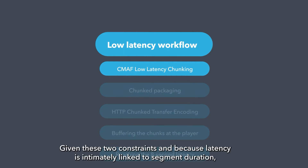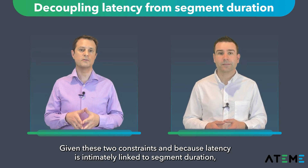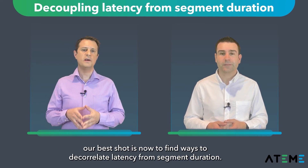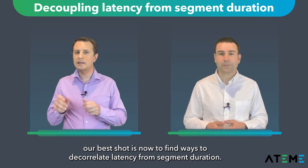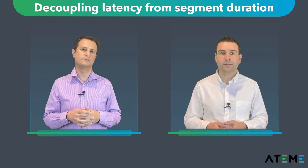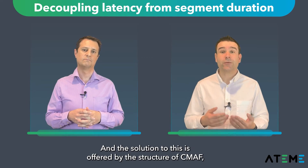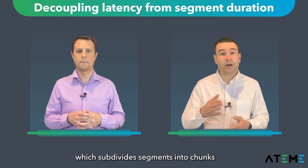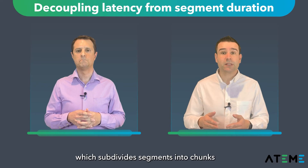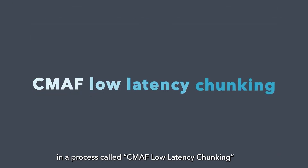Given these two constraints, and because latency is intimately linked to segment duration, our best shot is now to find ways to decorrelate latency from segment duration. And the solution to this is offered by the structure of CMAF, which subdivides segments into chunks, in a process that is called CMAF low latency chunking.